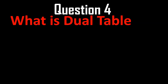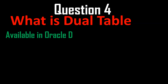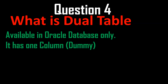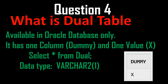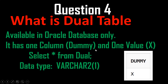Question number four: what is the DUAL table? It is available in the Oracle database. If you want to do any calculation, we use the DUAL table. It has only one column called DUMMY, and its value is X. The data type is VARCHAR2 and the size is 1.